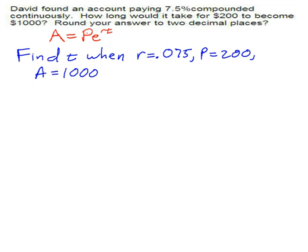So we're trying to find T when the interest rate is .075, the principal is $200, and the amount is $1,000. We next plug in what we know to try to solve for what we don't know. We end up with the equation 1,000 equals 200 times e to the .075t.